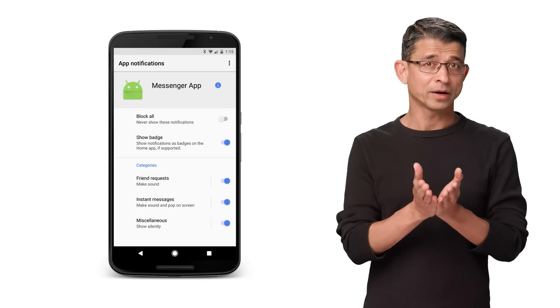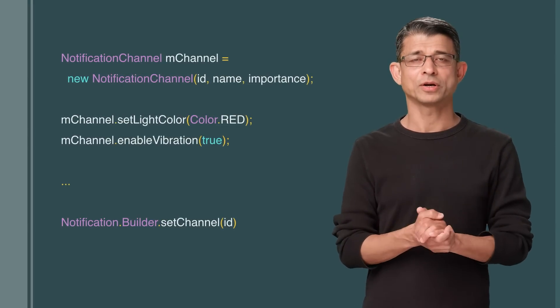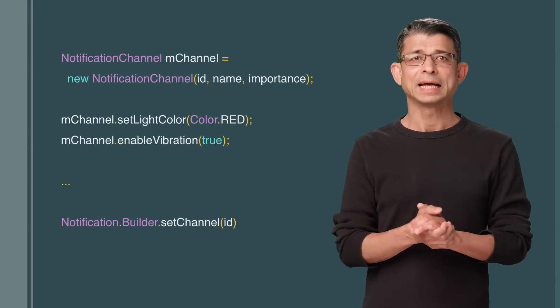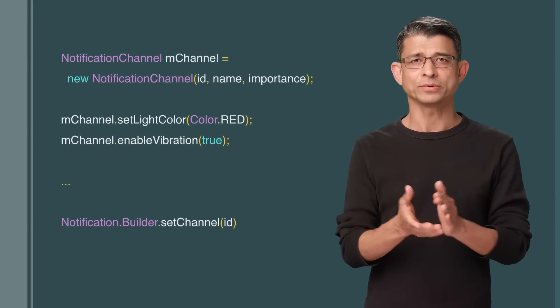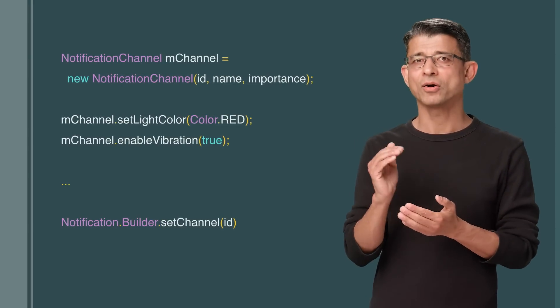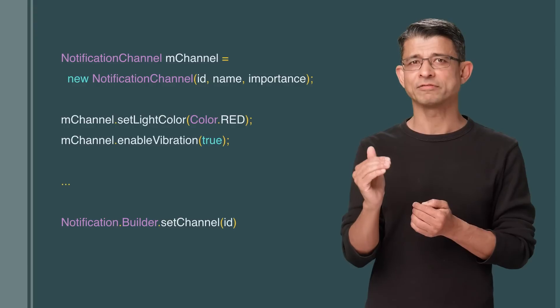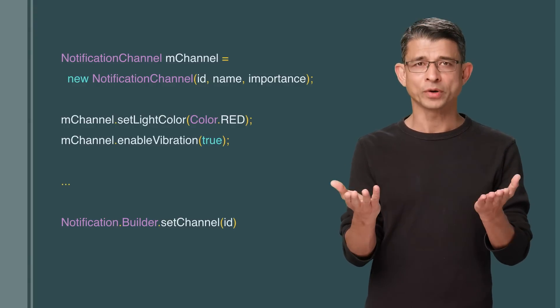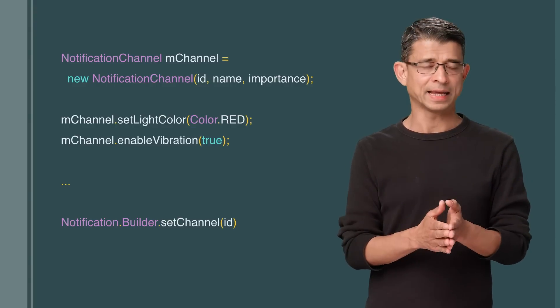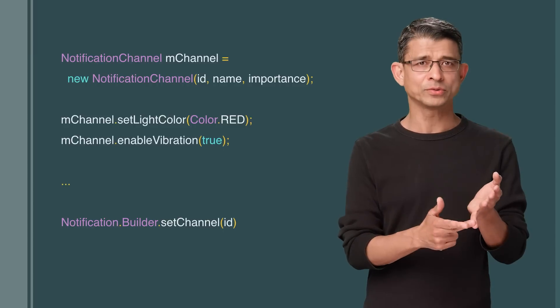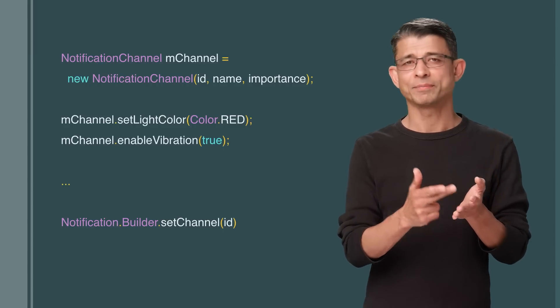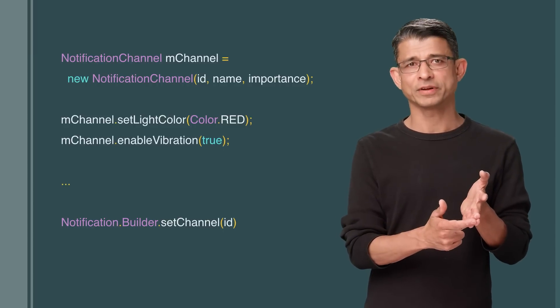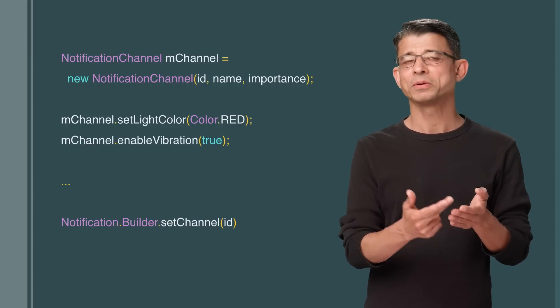All apps targeting O must implement channels, otherwise the notification will not show up. It's super easy to do — just create a channel and then call setChannel within the notification builder. There is much more in the new notifications API, like the ability to snooze, set timeouts to cancel, and background colors of notification display. Make sure to check out the details.